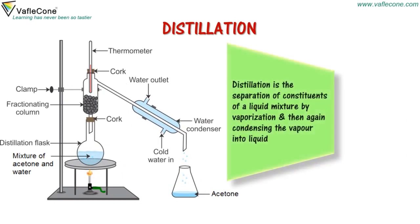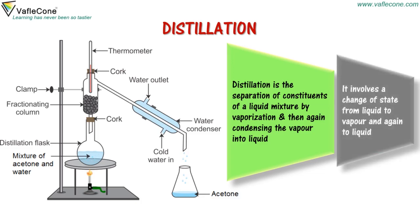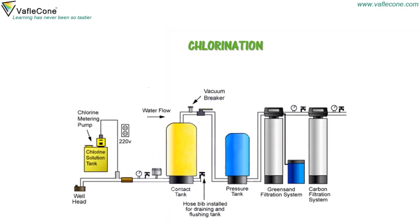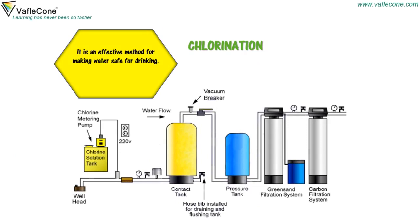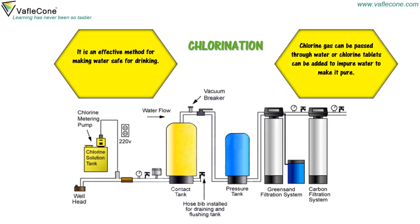Distillation is the separation of constituents of a liquid mixture by vaporization and then condensing the vapour back into liquid. It involves a change of state from liquid to vapour and again to liquid. It is an effective method for making water safe for drinking. Chlorine gas can be passed through water, or chlorine tablets can be added to impure water to make it pure.